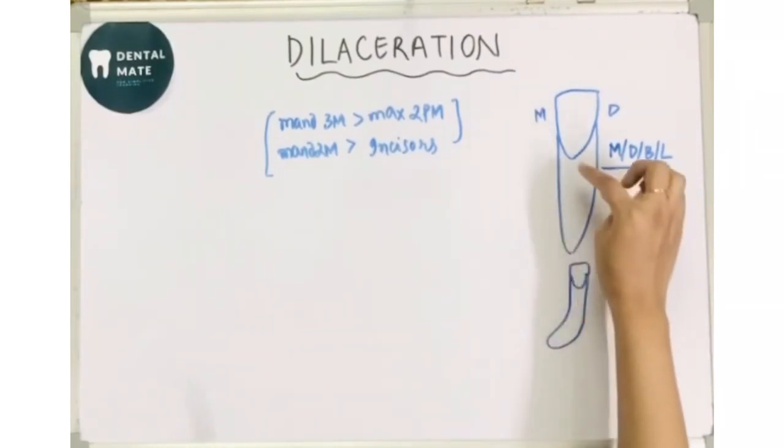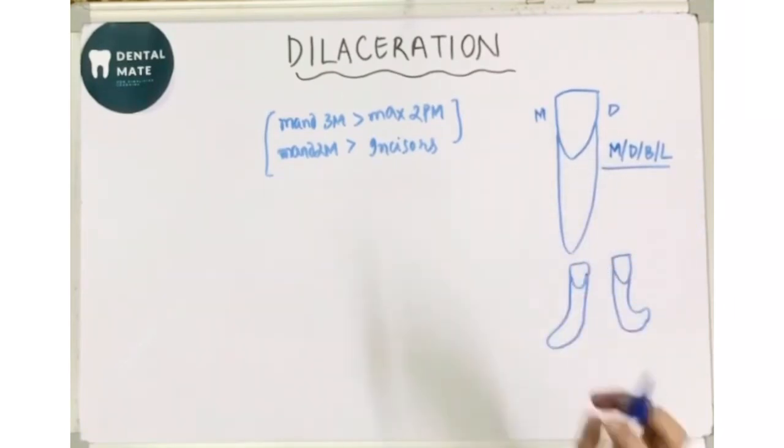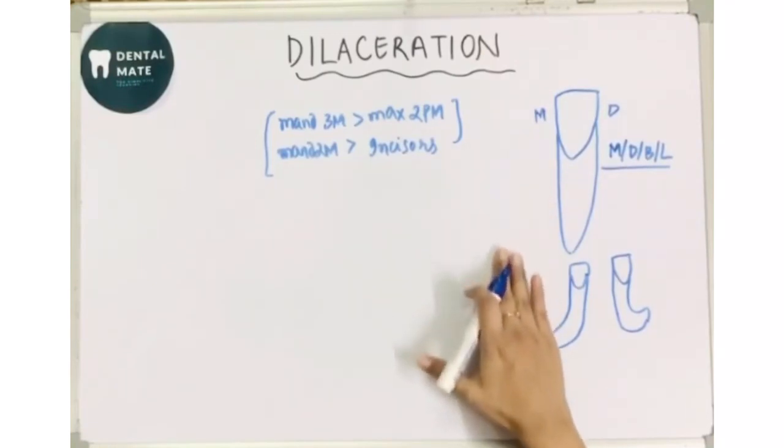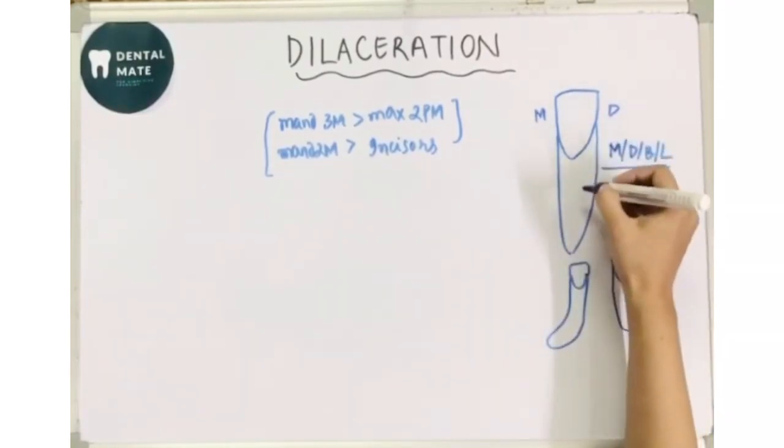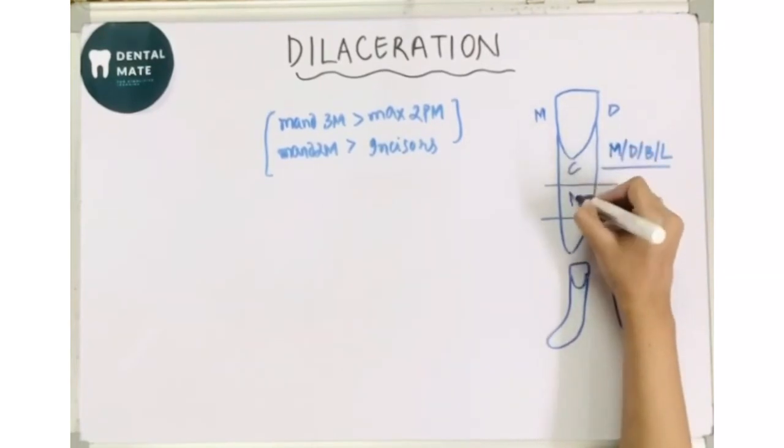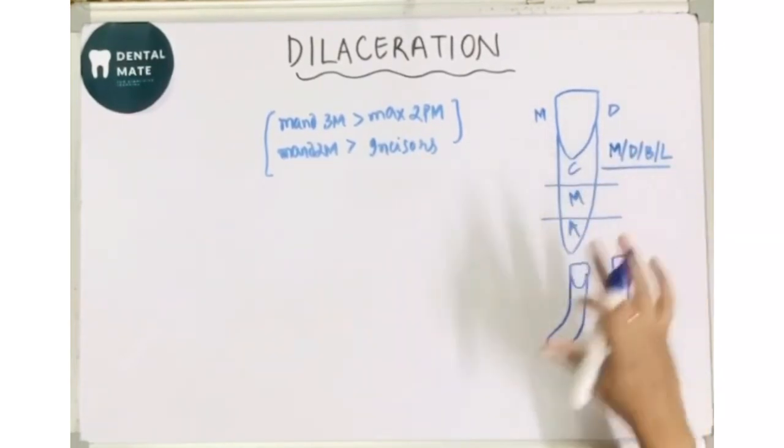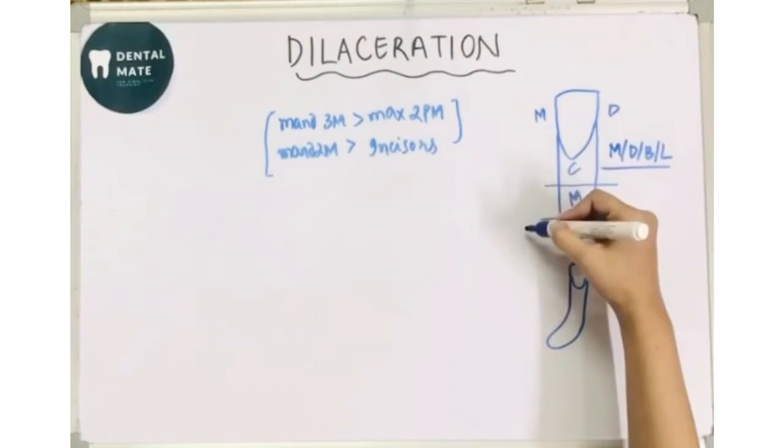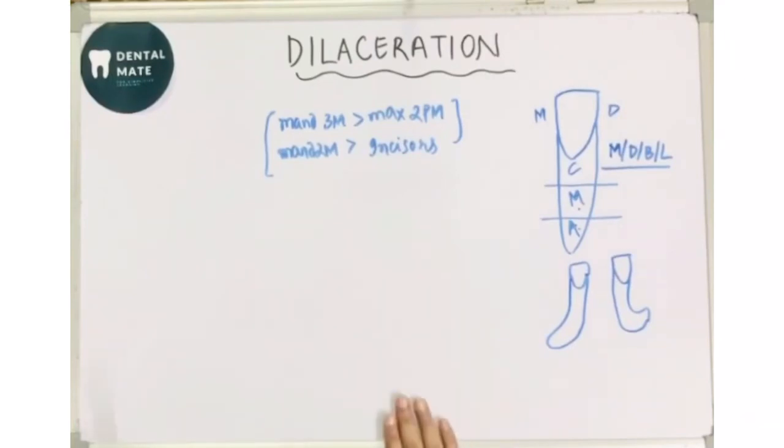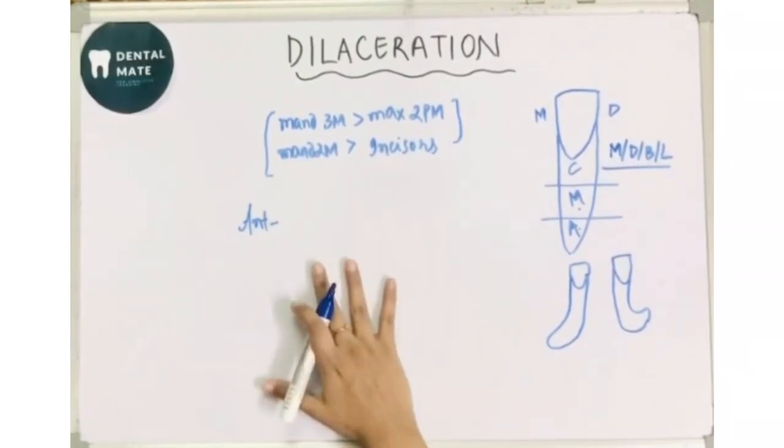And this abnormal angulation can be at any position in the length of the tooth. See, we know in dental anatomy we divide the tooth root in three different areas: coronal, middle, and apical.